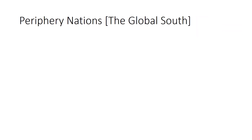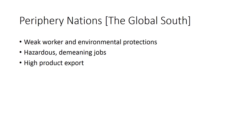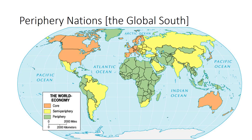Periphery countries are those that are on the bottom. They are the most beholden to the core countries. They typically have very weak worker and environmental protections. They have some of the most hazardous or demeaning jobs, and they export a high amount of product. The overall standard of living in these countries tends to be fairly low. Current periphery nations include most African nations, many Asian and Middle Eastern nations, most of Central America, and several South American nations. On the map, these are the countries listed in green.